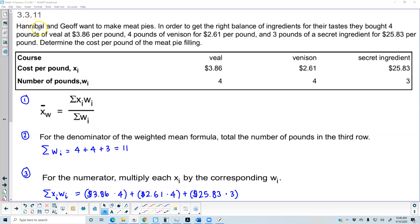Section 3.3.11: Hannibal and Jeff want to make meat pies. In order to get the right balance of ingredients for their tastes, they bought four pounds of veal at $3.86 per pound, four pounds of venison for $2.61 per pound, and three pounds of a secret ingredient for $25.83 per pound.